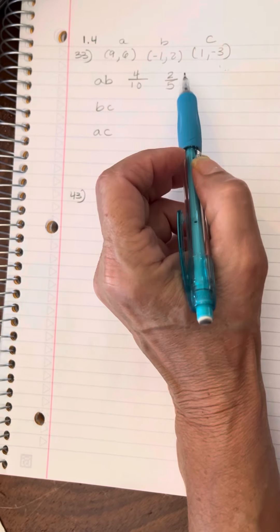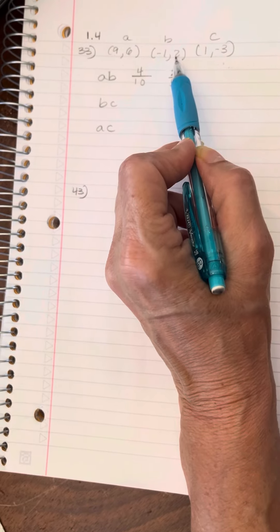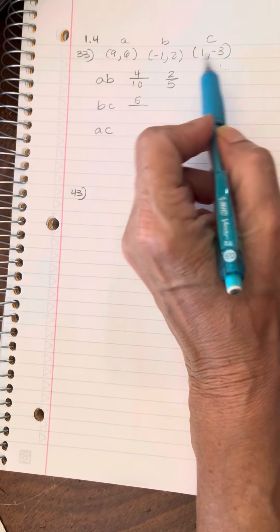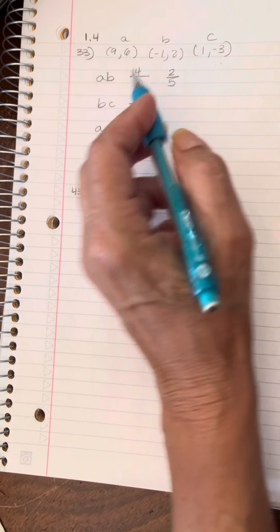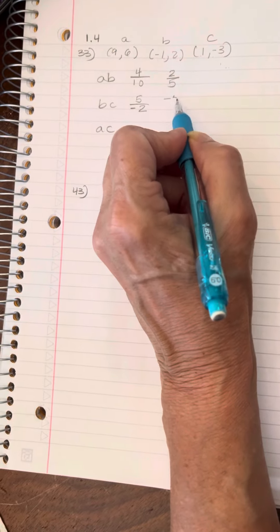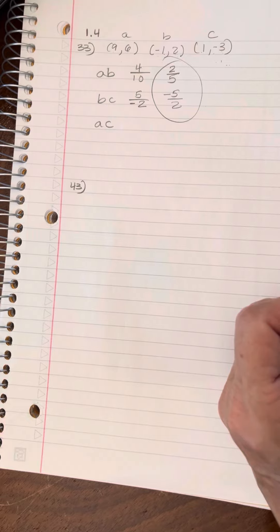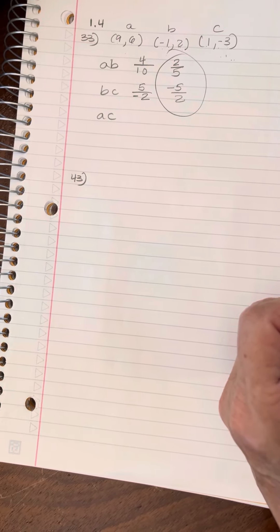All right, B to C. We'll go B minus C. So that's two minus negative three, which is five. Negative one minus negative one is negative two. That's negative five-halves. Yes, they are the negative reciprocals, so it is the vertices of a right triangle.